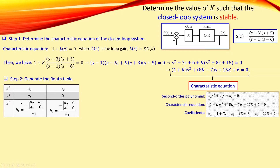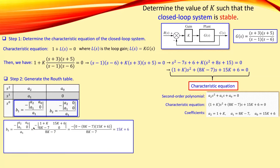Before continuing, I need to check the first column — that is always the necessary condition for stability using the Routh-Hurwitz stability criterion. To do that, I first need to determine b1 and b2. For b1, we use the formula: form a 2×2 matrix of the four relevant elements, calculate the determinant, place a minus sign, and divide by the leading entry of the previous row.